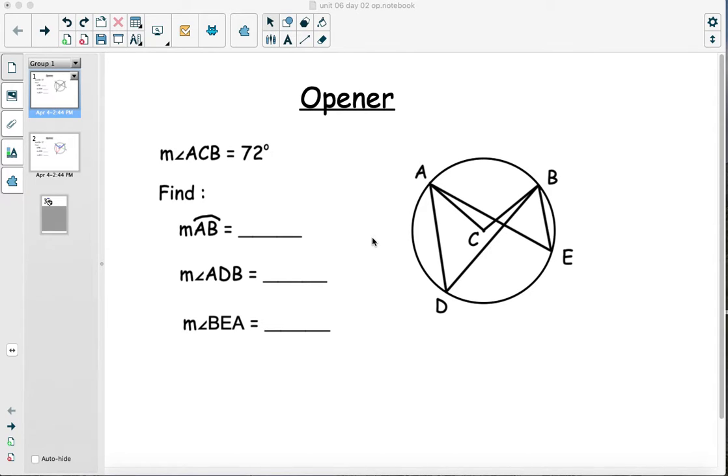So we've been working with arcs and central angles and inscribed angles. I wanted to spend another day working with that. Let's start with an opener. I'm giving you this picture. It looks pretty crowded. I'm telling you the measure of angle ACB is 72 degrees. I'd like you to find the measure of arc AB, the measure of angle ADB, and the measure of angle BEA.